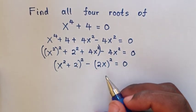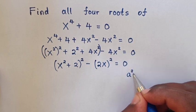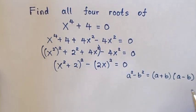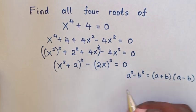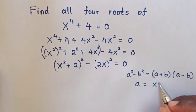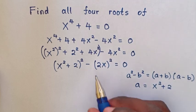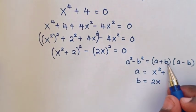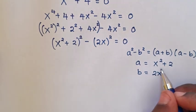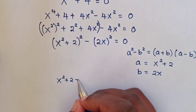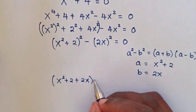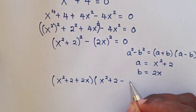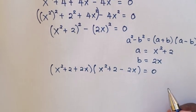This expression is in the form of a difference of squares. We apply the rule a² - b² = (a + b)(a - b). Comparing, a = x² + 2 and b = 2x. So we get (x² + 2 + 2x)(x² + 2 - 2x) = 0.